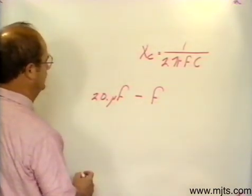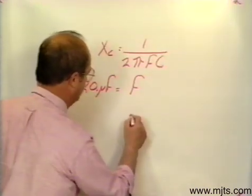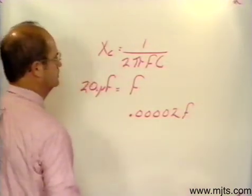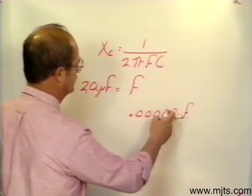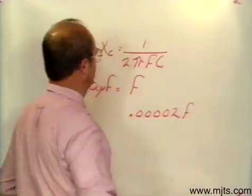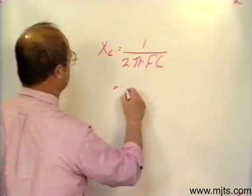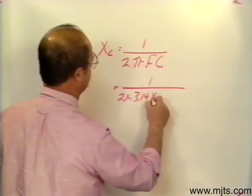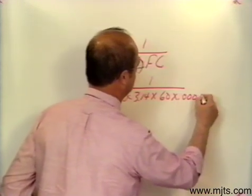Our decimal is right here, so we're going to have to move it over two plus four more places. We're going to have 0.00002 farads. In other words, 20 microfarads equals — tenths, hundredths, thousandths, ten thousandths, hundred thousandths — we're going to have two hundred thousandths for our farads value. To plug that into the formula, it would look like this: one over two times 3.14, which is a constant, times our 60 cycles, times 0.00002.